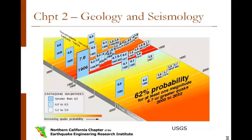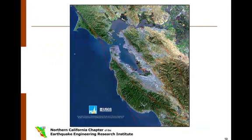The Working Group on California Earthquake Probabilities first convened in 1988 and estimates probabilities of earthquakes on California faults. The most recent estimate for the San Francisco Bay Area is that there is a 62% probability for at least one magnitude 6.7 or greater quake in the next 30 years. Since 1995, the probability for a magnitude 7.0 earthquake on the Hayward-Rogers Creek fault system has increased from 28% to 31%.